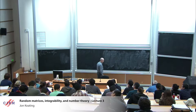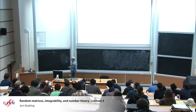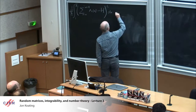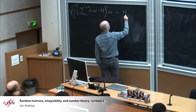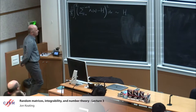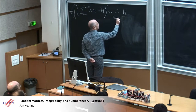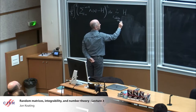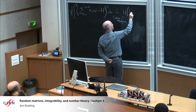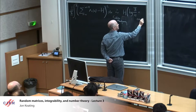Gauss had the numerical data but didn't frame a precise conjecture for what this was. If the primes were completely uncorrelated Poisson variables, we'd expect the variance to be the size of the mean, so we'd expect this to be H. That turns out not to be the case. There's a conjecture of Goldston and Montgomery.